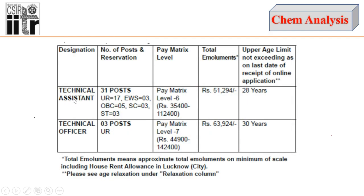You can see there are two types of designation posts — one is Technical Assistant and one is Technical Officer. In this video I will mainly discuss the Technical Assistant post, since this post is for chemistry background students. I will upload another video where I will discuss the other posts for engineering students.